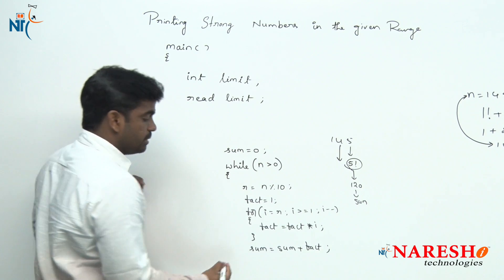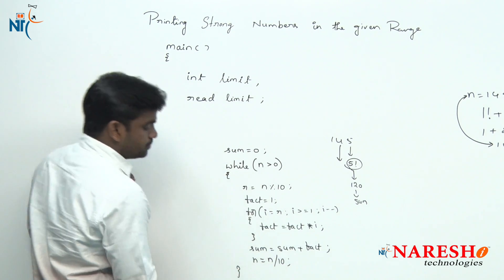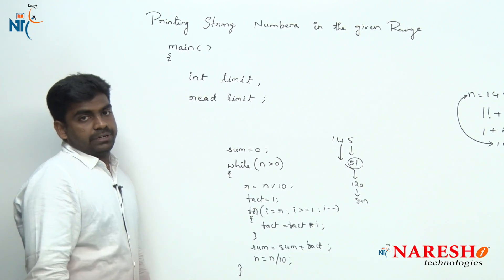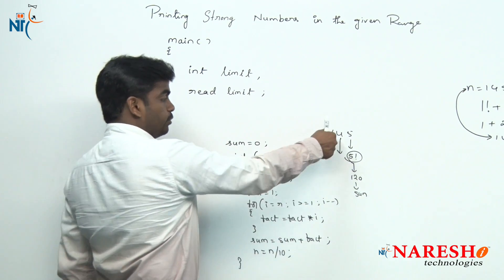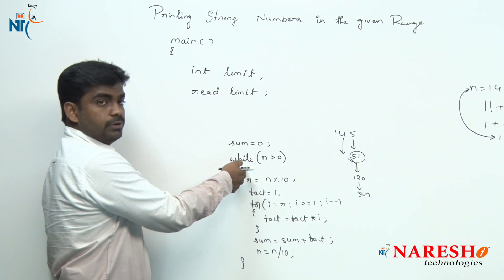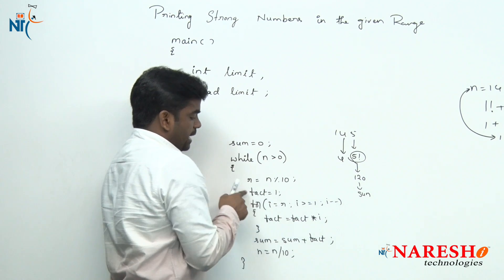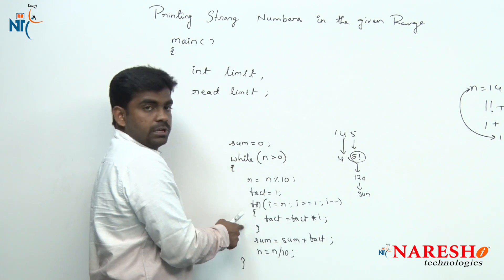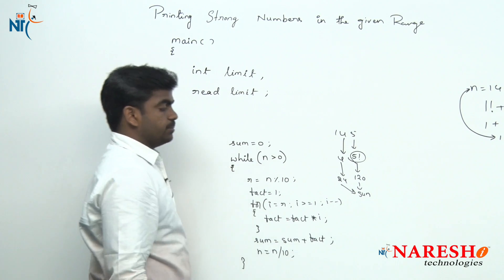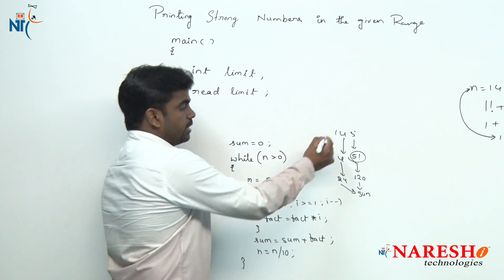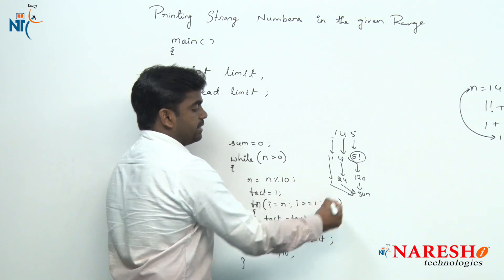Next we need to work with the digit 4. We perform N equals N divided by 10, which gives 14. The loop executes again: N mod 10 gives 4, and we find 4 factorial which is 24, adding it to sum. Then N divided by 10 gives 1, and we find 1 factorial and add it to sum as well.